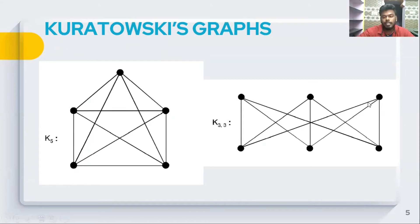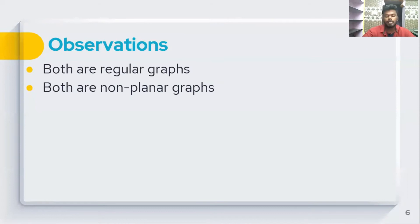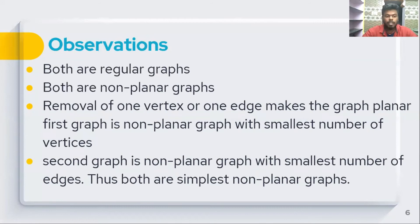Of course, both are non-planar graphs. Now, if we remove a vertex or remove one edge, it remains a non-planar graph. If we delete an edge and that edge is intersected, we will delete the edge. K5 is the non-planar graph with the smallest number of vertices, and K3,3 is the non-planar graph with the smallest number of edges.